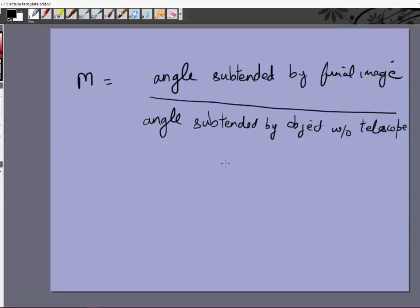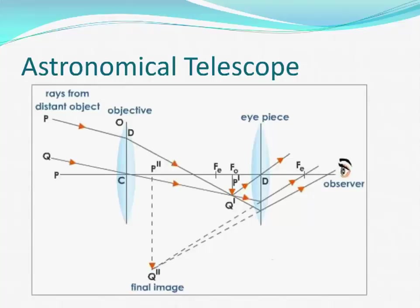Looking at the figure again: for a telescope, the object will very likely be very far away, so the rays coming in will be parallel. Rays parallel to the principal axis converge at the focus. Rays parallel to themselves but not to the principal axis form an image at the focal plane. From the lens formula, if u is infinity, v has to be f. So rays coming at an angle form an image at f₀ — the focal length of the objective — and fe is the focal length of the eyepiece.